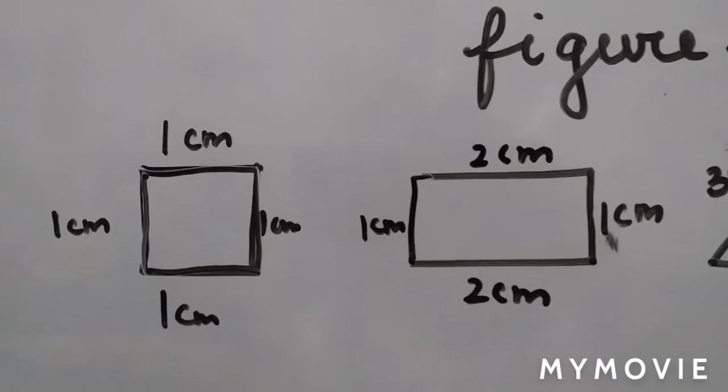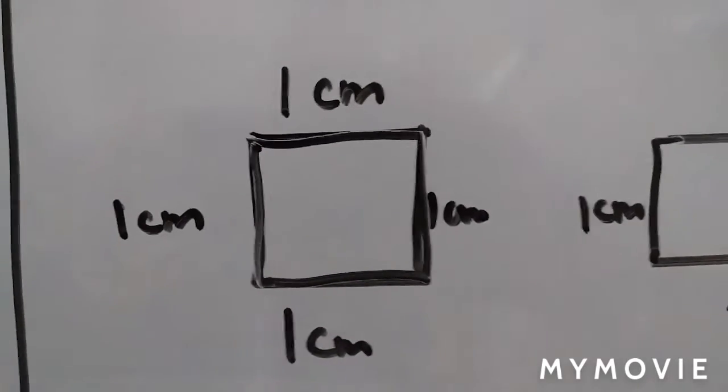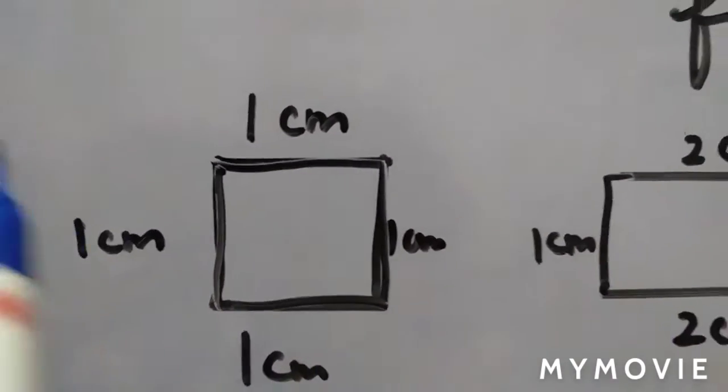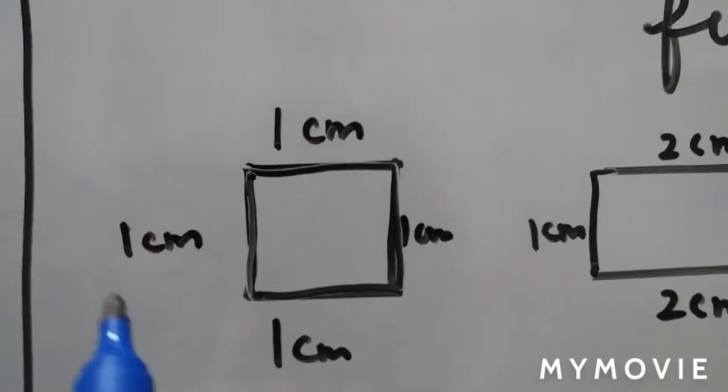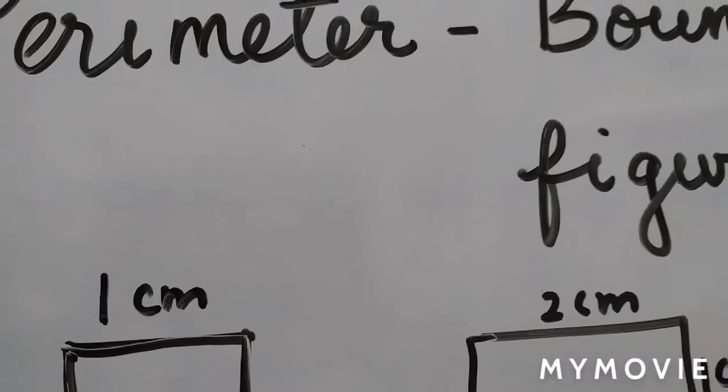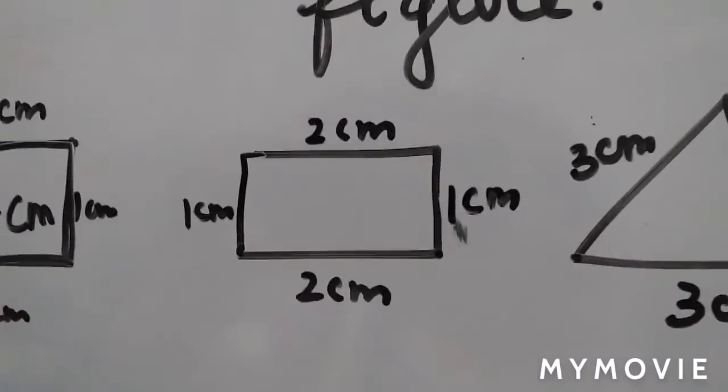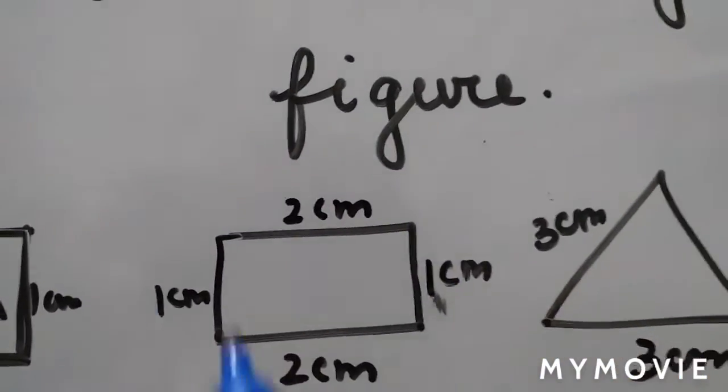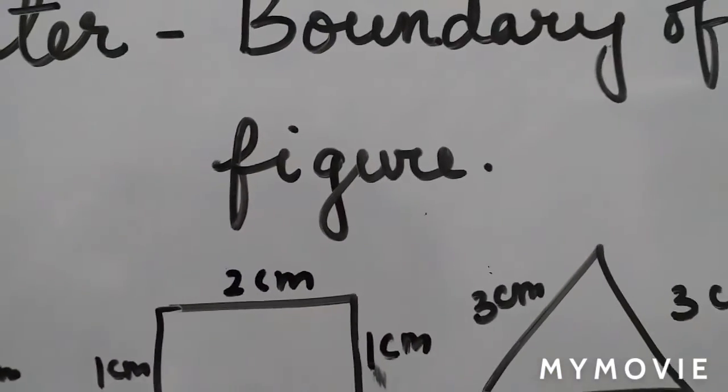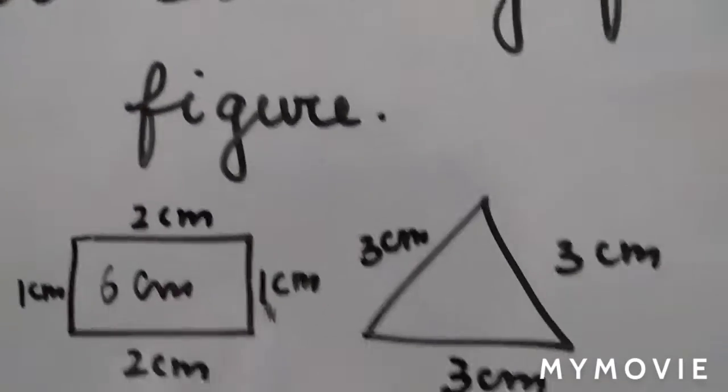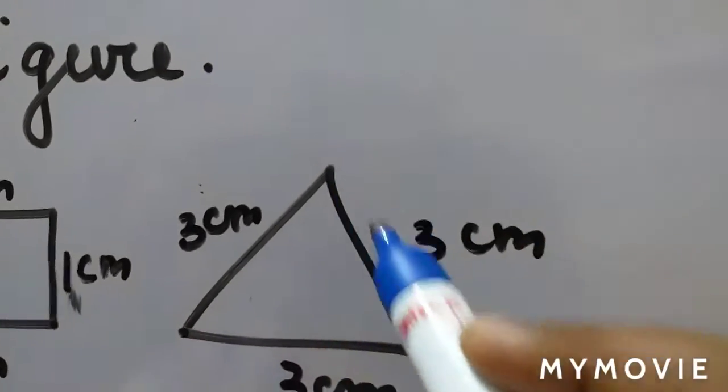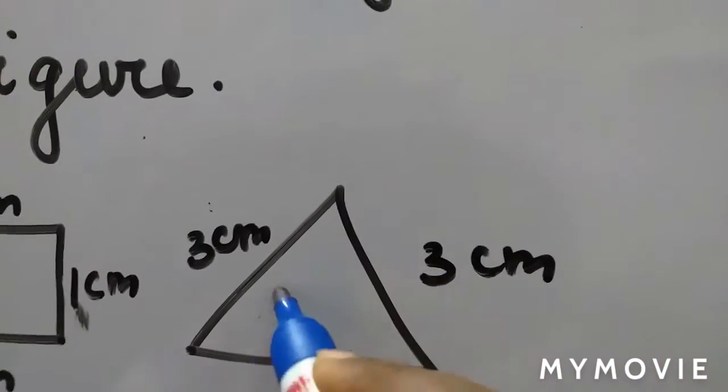For the square you have 1 cm, so this perimeter will be 1 cm plus 1 cm plus 1 cm plus 1 cm. The perimeter will be 4 cm. Here, how much will the perimeter be? 2 plus 1 plus 2 plus 1, that's 6 cm. And this triangle is 3 cm: perimeter is 3 plus 3 plus 3, this will be 9 cm.